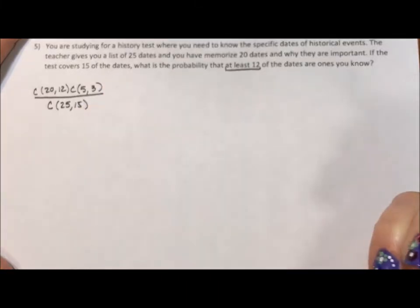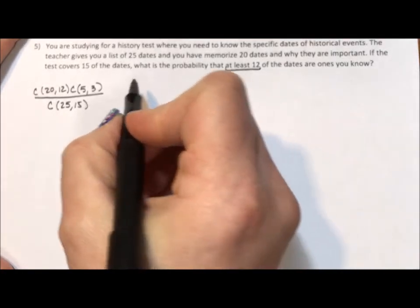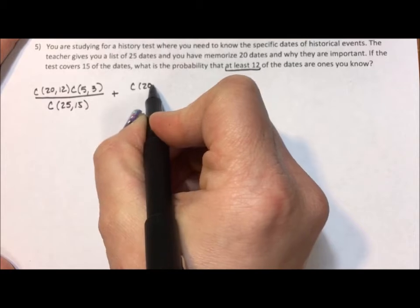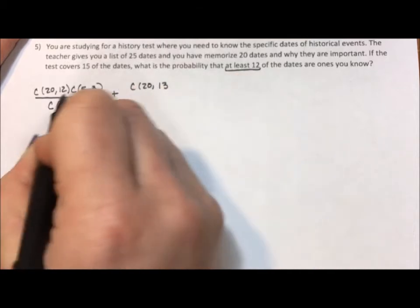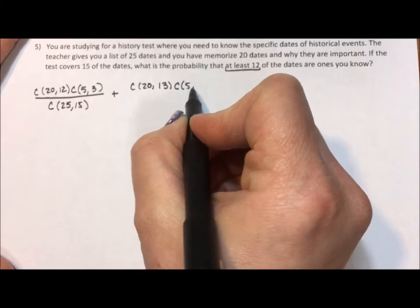But it doesn't say exactly 12. It says at least 12. So I need to add to this the combination of the 20 taken 13 at a time. Now this is the test where you know 13 of the items.